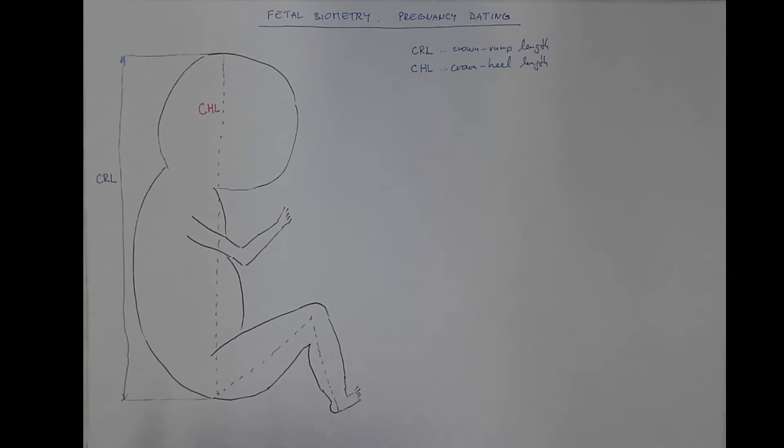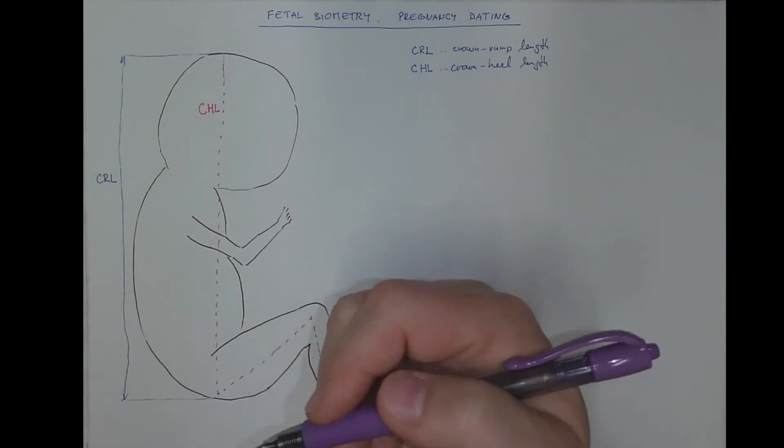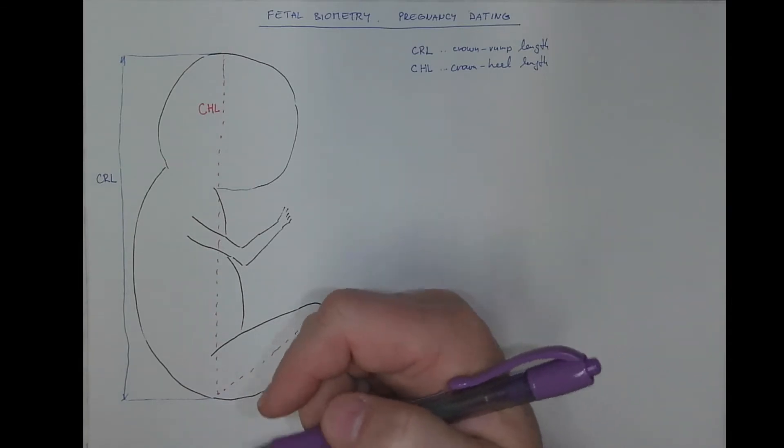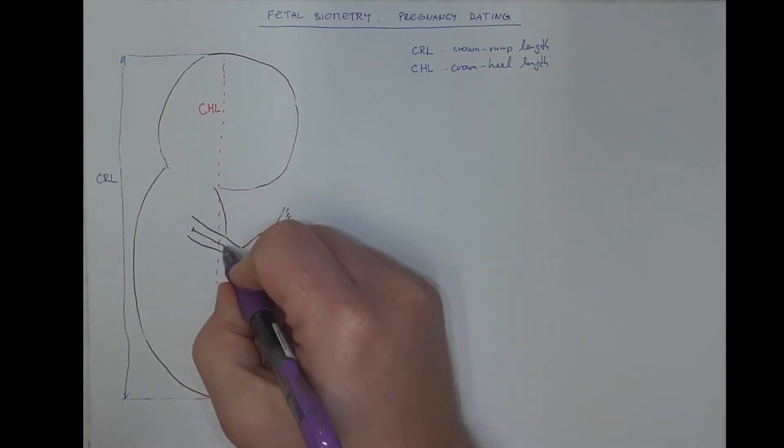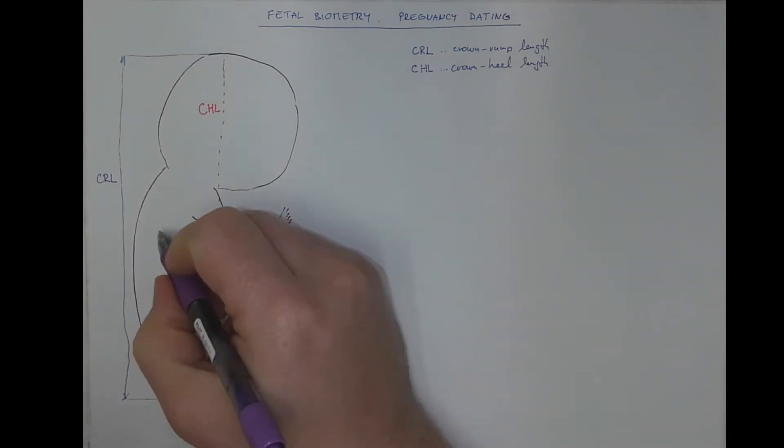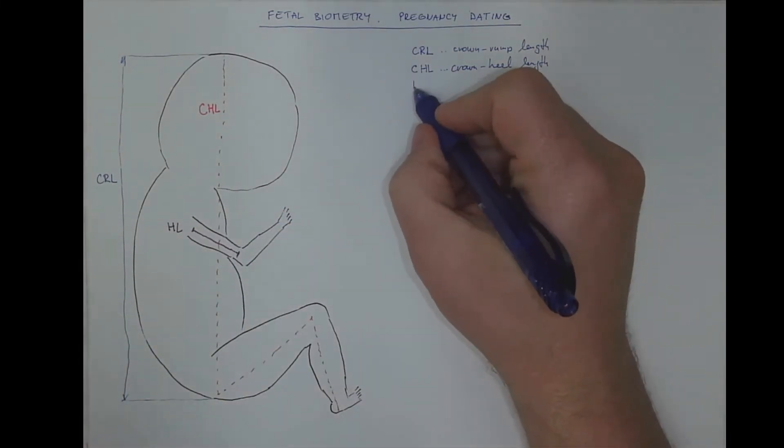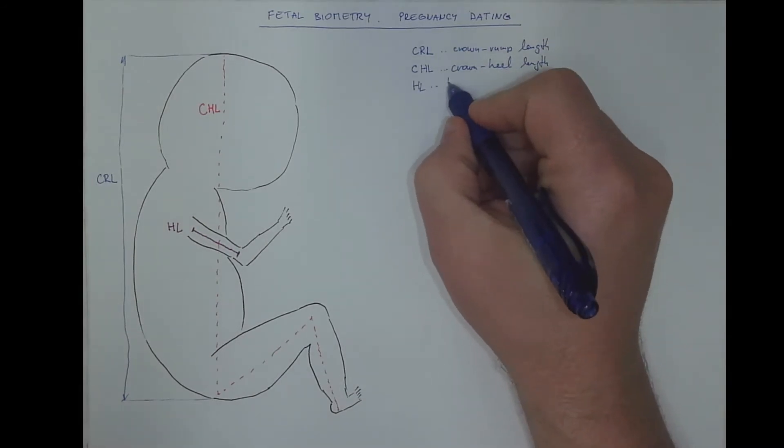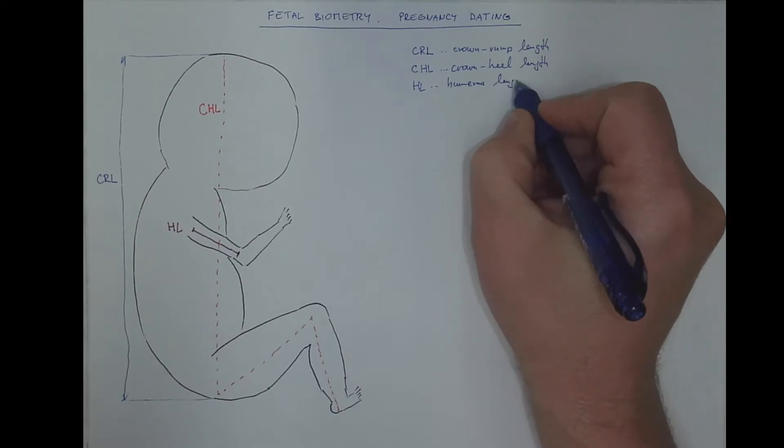But more important from the point of view of prenatal ultrasound, which is the method of choice during fetal biometry, is the length of the humerus bone. Known as the humerus length. So HL is the humerus length.